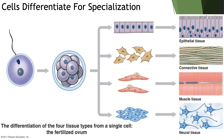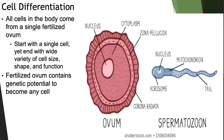When cells first start out, they generally tend to be unspecialized and non-differentiated. It is only through specialization that they develop the characteristics that make them unique. Most cells are going to start from a single fertilized ovum, which is the egg mixed with the sperm.